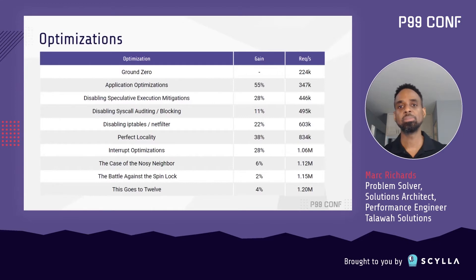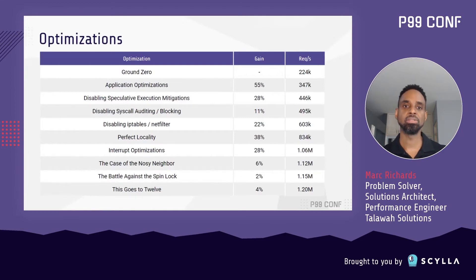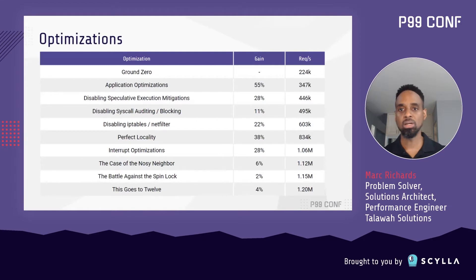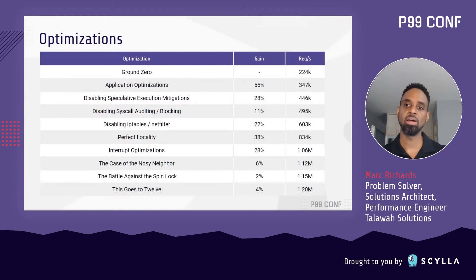So this table lists the nine optimization categories that I initially used. It shows a percentage improvement for each in one column and the cumulative throughput in the other. It's a pretty solid illustration of the power of compounding when you're doing optimization work.